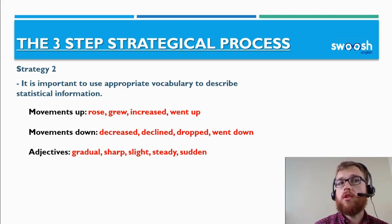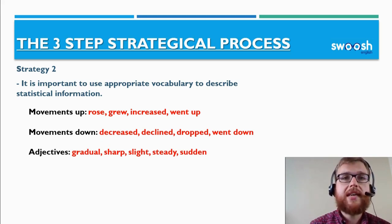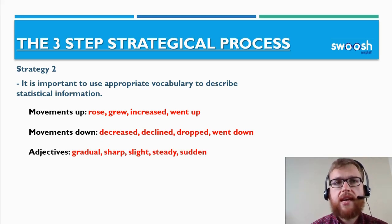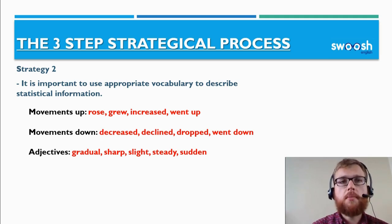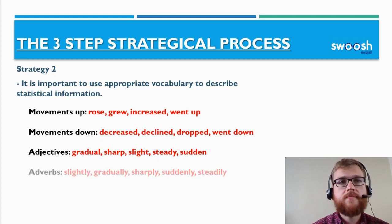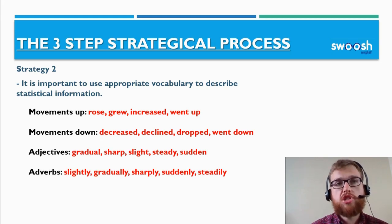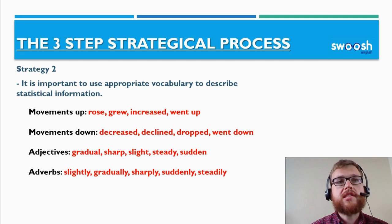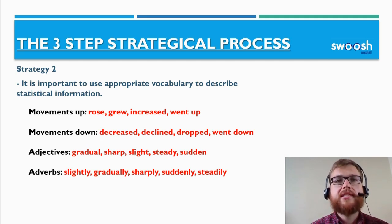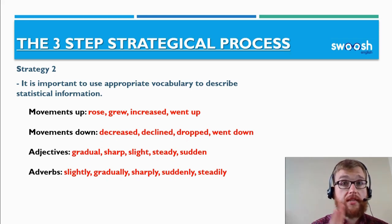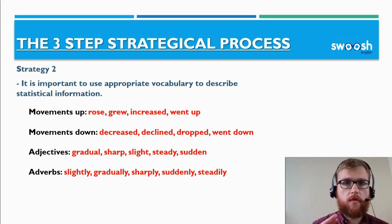Our adjectives include: gradual, sharp, slight, steady, sudden. Our adverbial phrases include: slightly, gradually, sharply, suddenly, steadily. Remember, most of these adverbial phrases are formed by adding '-ly' to the end of the adjective to make the adverbial phrase.